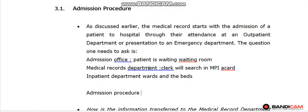We have something we studied previously called the number register. The number register is the book where we get the medical record number — it is a book with pre-printed numbers that we assign to patients as their medical record number.